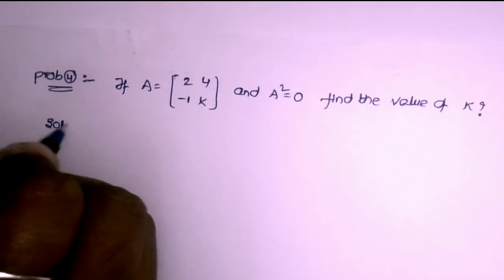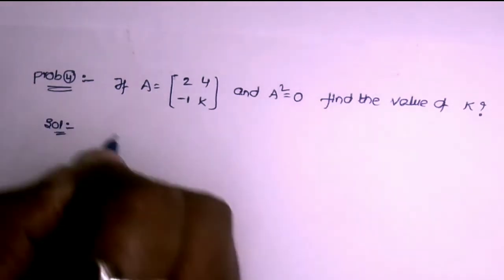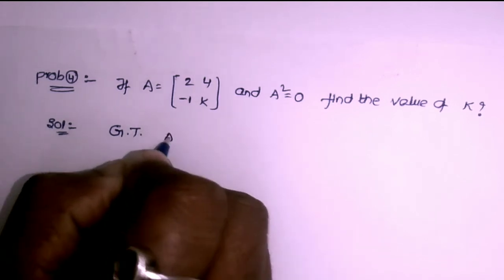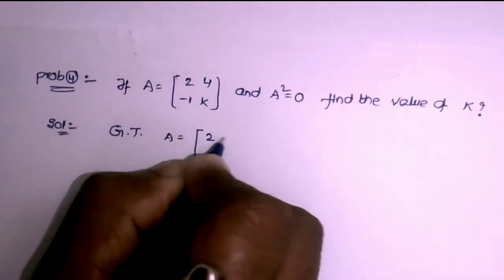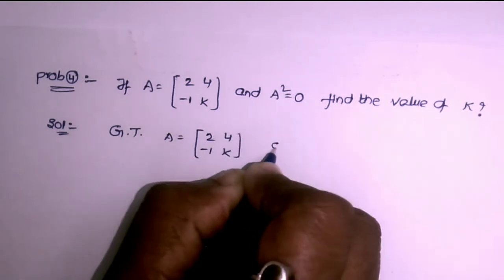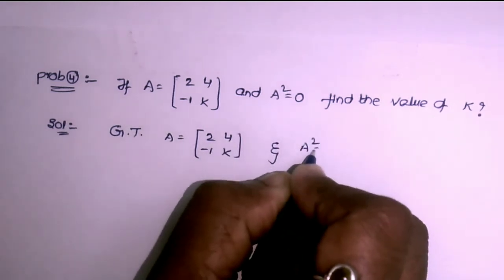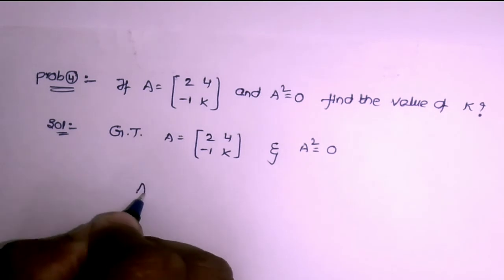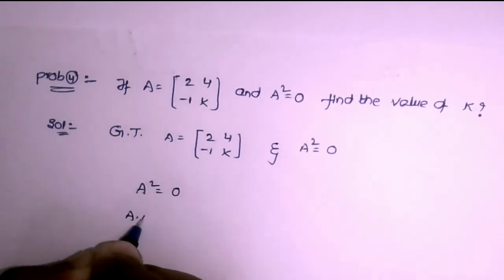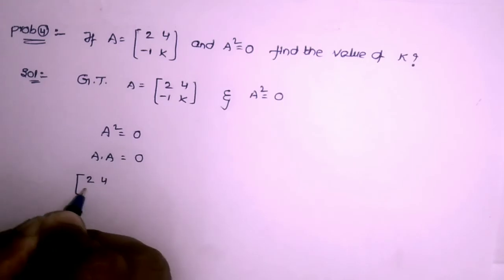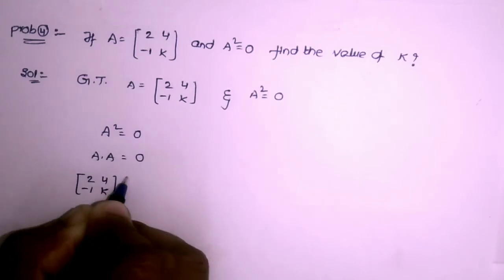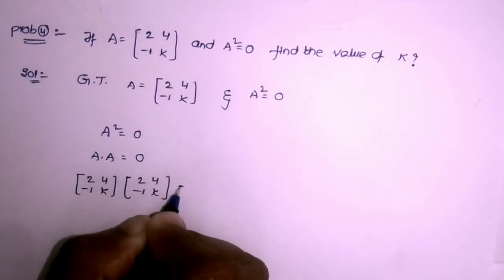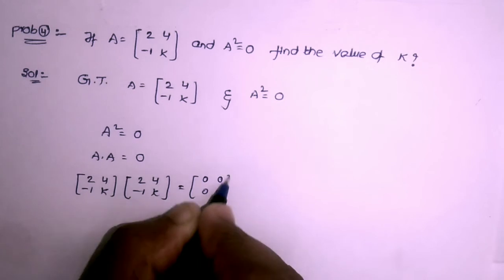Fourth question: if A = [[2,4],[-1,K]] and A² = 0, find the value of K. Given A = [[2,4],[-1,K]] and A² = 0 (zero matrix). A² = A×A, so [[2,4],[-1,K]] × [[2,4],[-1,K]] = [[0,0],[0,0]].